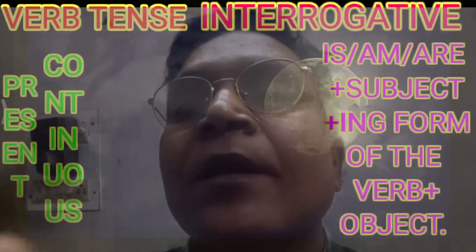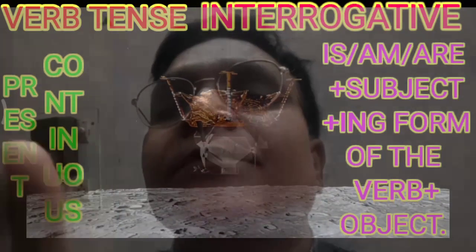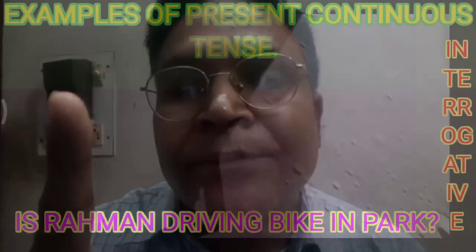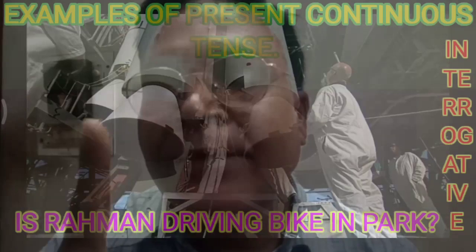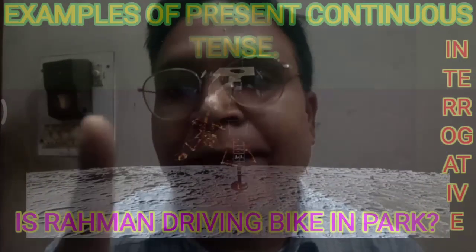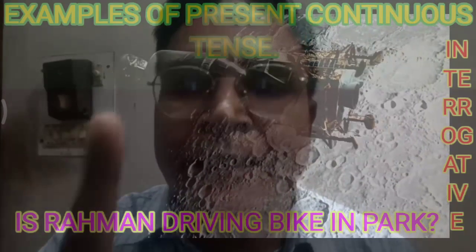Now we meet the interrogative case of present continuous tense. Its root formula is: 'is/am/are' plus subject plus 'ing' form of the verb plus object. Example: Is Rahman driving a bike in the park? This is a perfect example of the interrogative case of present continuous tense — it bears a question mark at the end and begins with 'is.'